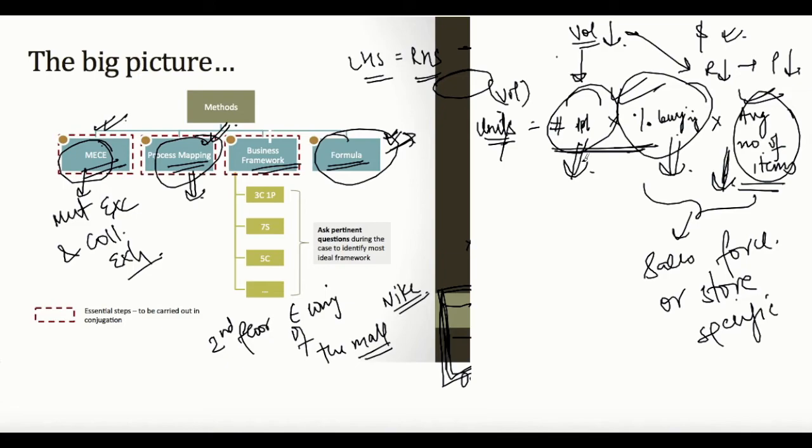So the formula approach is very helpful because it makes sure that you are not missing out on anything. If I had to break down volume through a MECE approach, it might be the case that I might miss out on the average number of items or the percentage buying. With the formula, I usually find that I'm not able to miss out on anything. But if you're comfortable with MECE, go ahead with that. You can follow the discussion on all three issues on the separate video where it is more exhaustive.